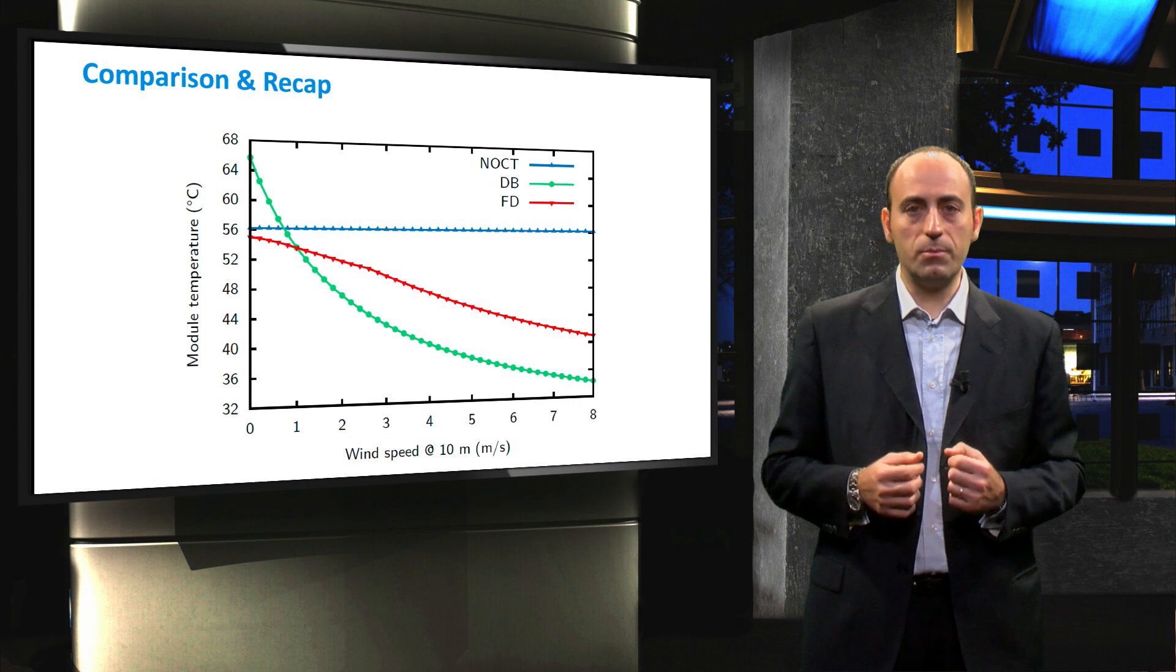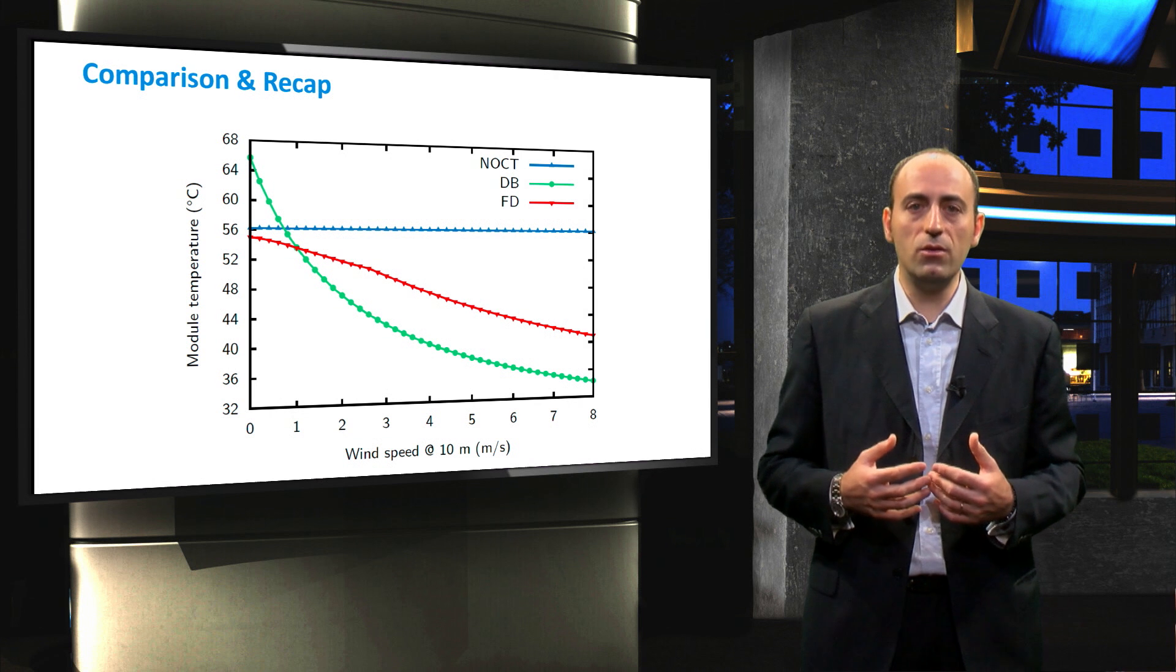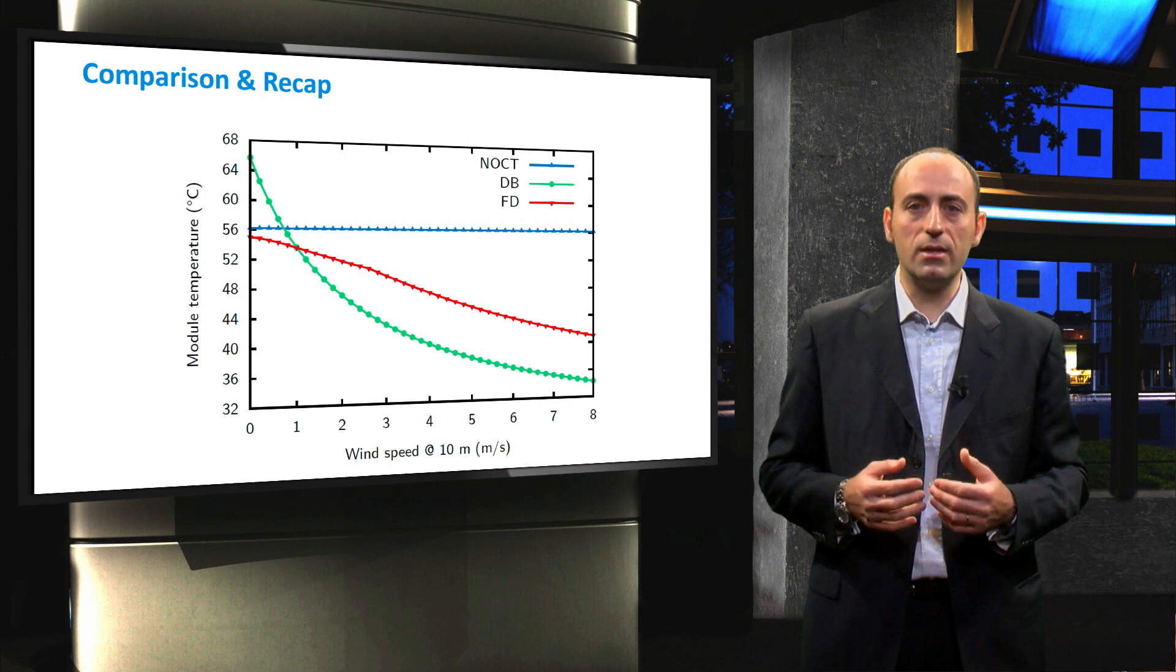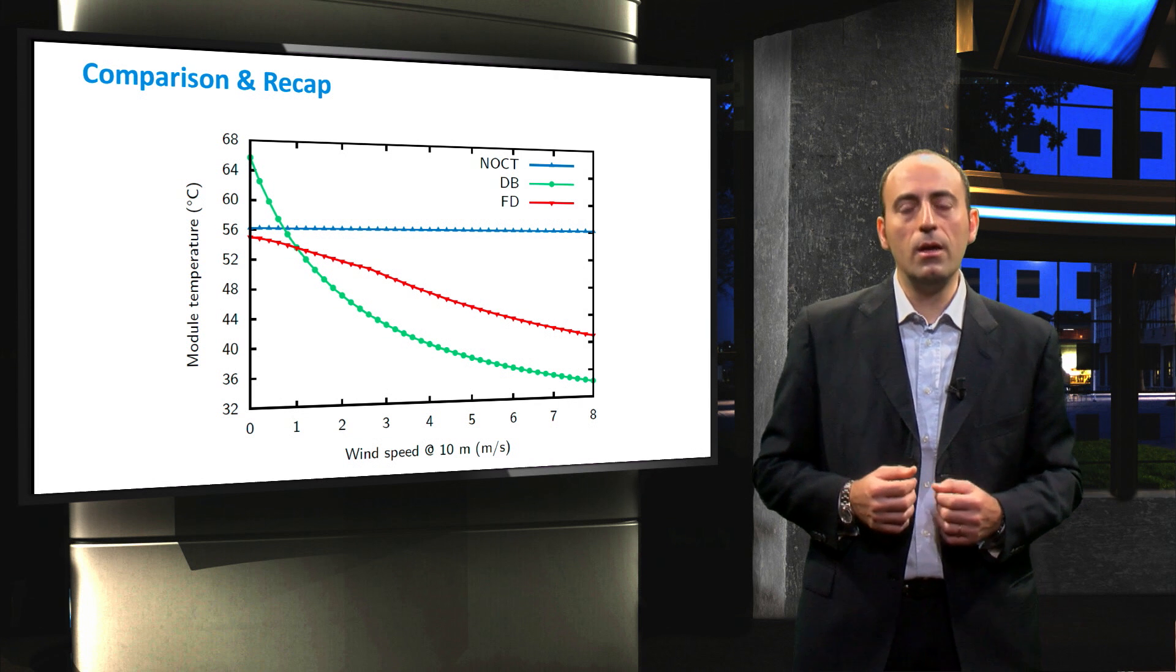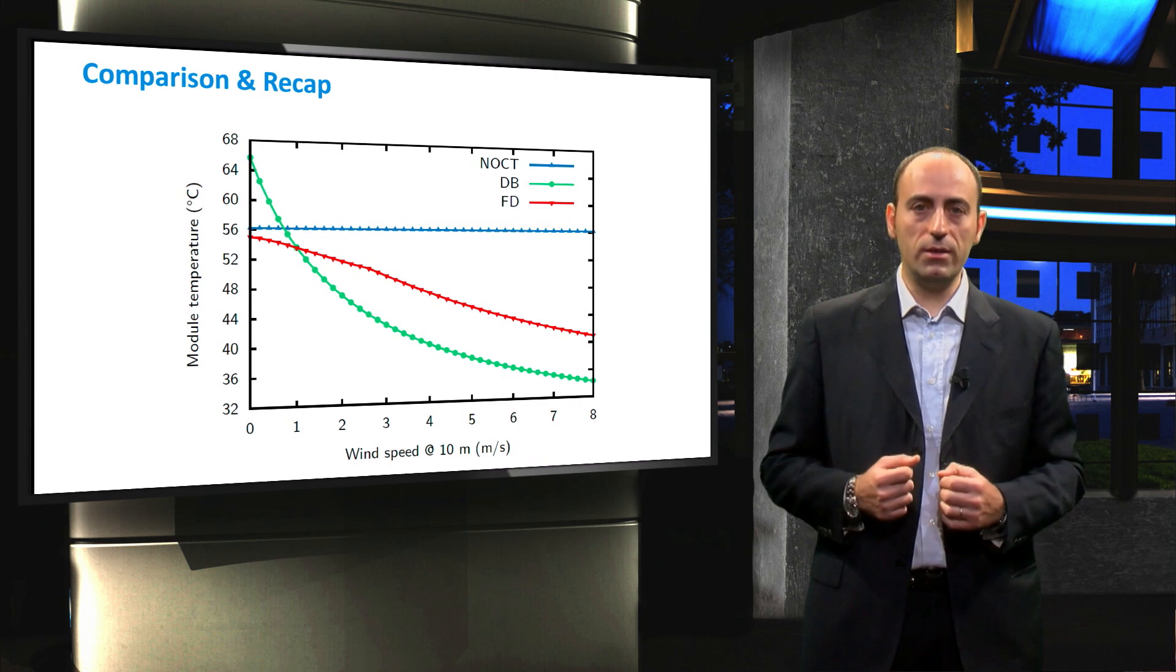After 3 meters per second, eventually air turbulences and vortices are generated on top of the surface, thus accelerating the heat exchange, resulting in a sudden drop of the curve. In the next video, we will start to talk about all the issues related to mounting.